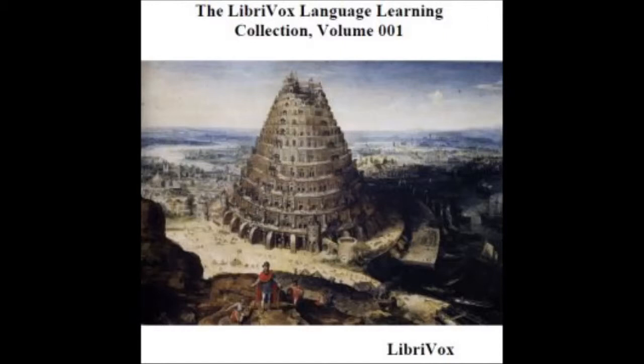A Grammar of the English Tongue. Grammar, which is the art of using words properly, comprises four parts: Orthography, Etymology, Syntax, and Prosody. In this division and order of the parts of grammar I follow the common grammarians, without enquiring whether a fitter description might not be found. Experience has long shown this method to be so distinct as to obviate confusion, and so comprehensive as to prevent any inconvenient omissions.